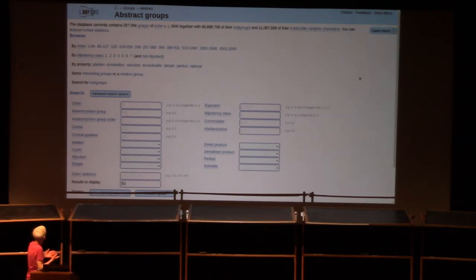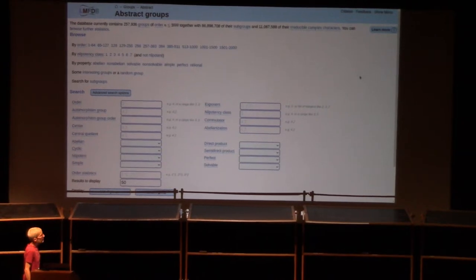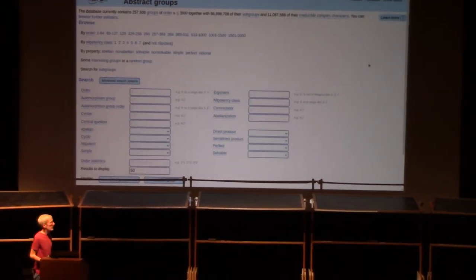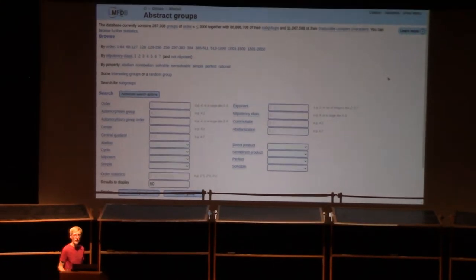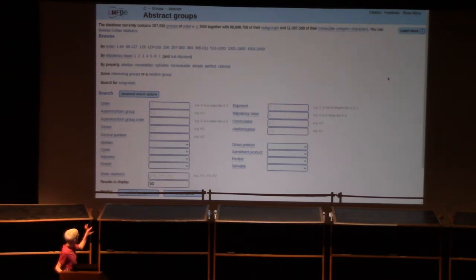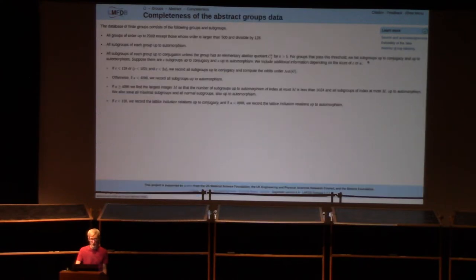This is a database of abstract groups. As you can see at the top, it says there are 257,936 groups of order N up to 2,000. That's not quite all of them — anyone who has studied groups of order 1,024 knows there are a whole lot more. But with the exception of a few specific orders where there are just too many groups to put in the LMFDB, it has all of them.